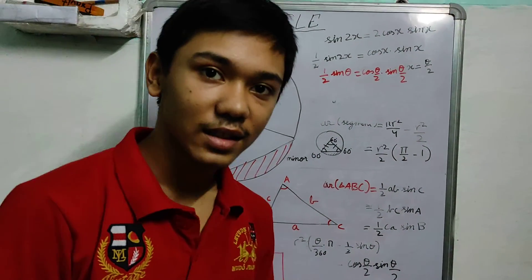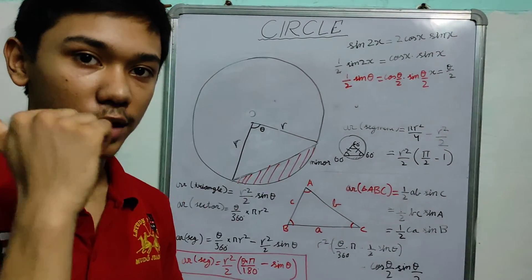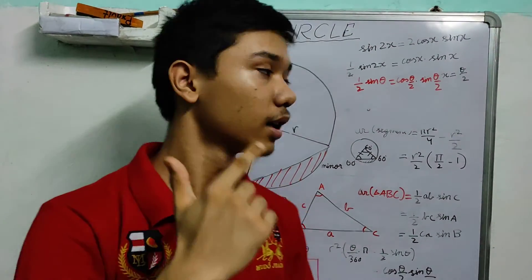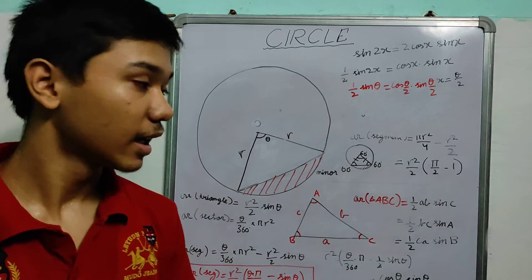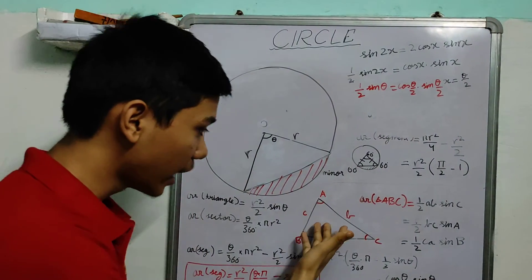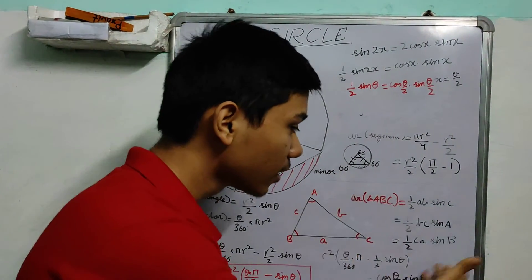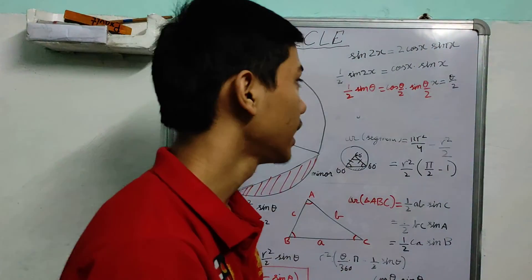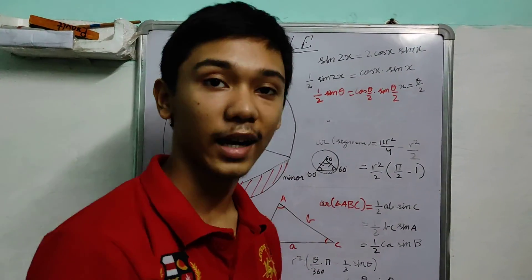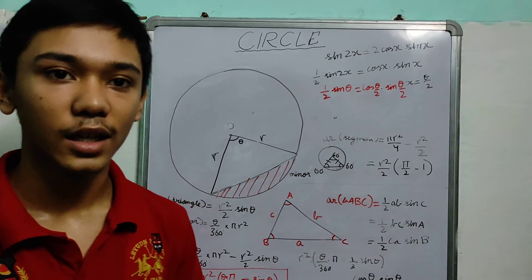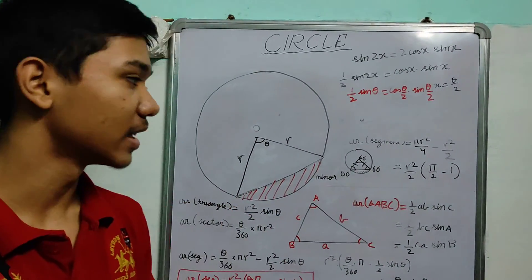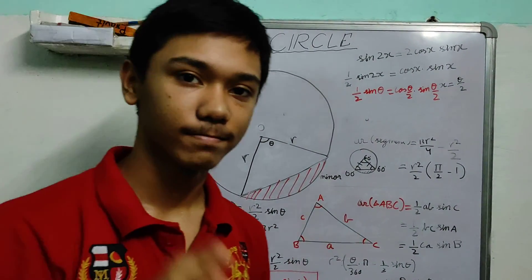So now we are done. We have learnt the area of a sector, area of a segment, arc length, area of any triangle using the sine formula, and a common trigonometric identity. Thanks for watching and I hope this helps.